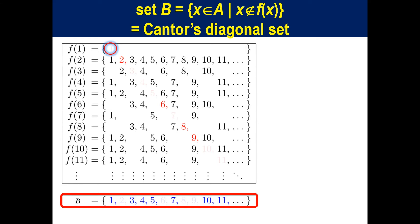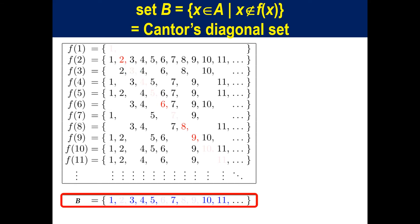Because there is no 1 as an element in F₁, 1 is included as an element in B — that is what is meant by B whose element x is not an element of f(x). There is 2 as an element in F₂, thus 2 is not included as an element in B. There is no 3 as an element in F₃, thus 3 is included as an element in B, and so on. Then B is different from any f_i in the list: different from F₁ in the first element, different from F₂ in the second element, different from F₃ in the third element, and so on.